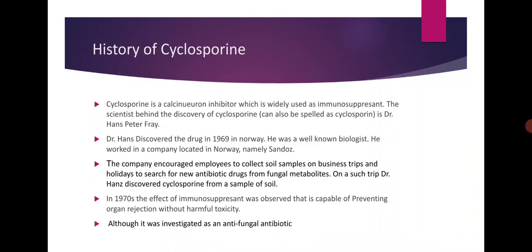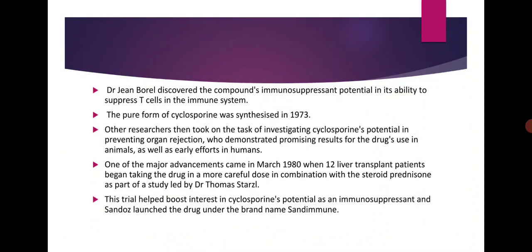On such a trip, Dr. Hans discovered Cyclosporine from a sample of soil. In the 1970s, the effect as an immunosuppressant was observed — it was capable of preventing organ rejection without harmful toxicity, although it was investigated initially as an antifungal antibiotic. Dr. Jean Baudel later discovered the compound's immunosuppressant potential and its ability to suppress T cells in the immune system.